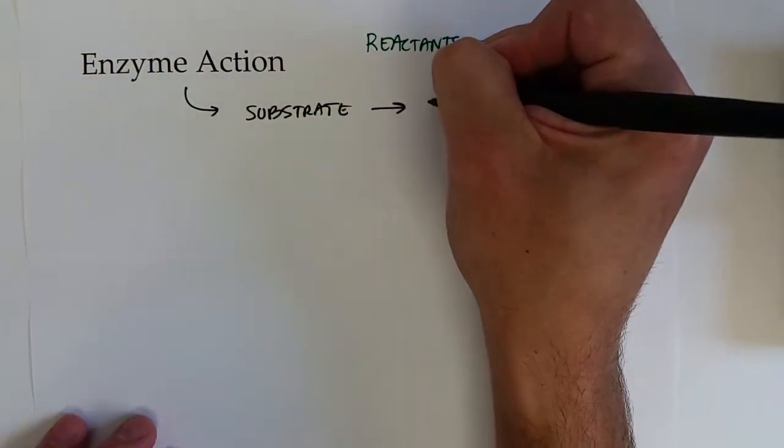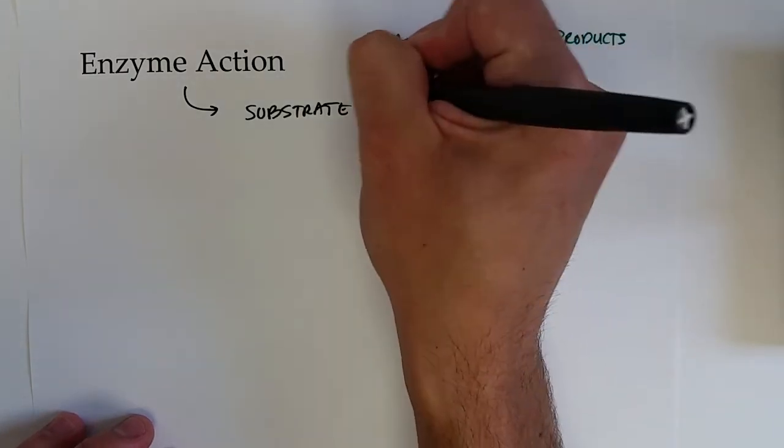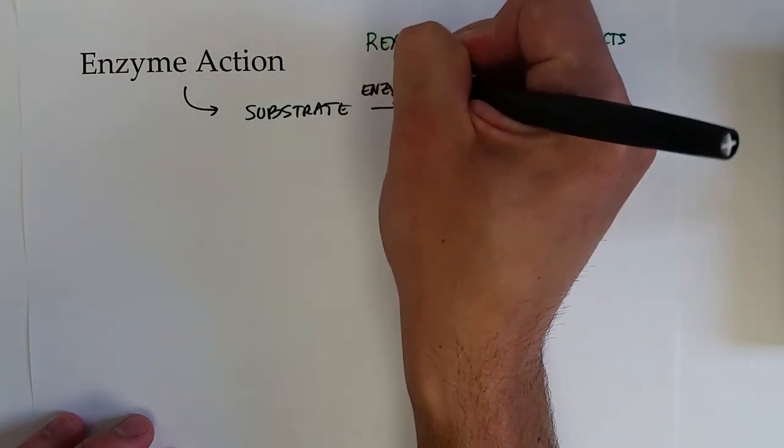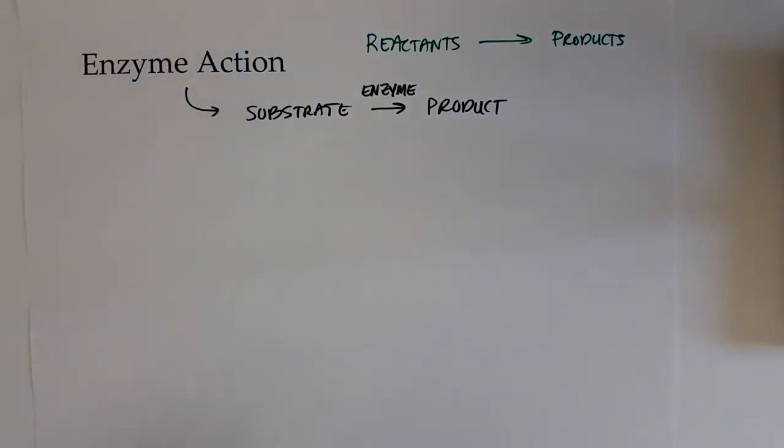For enzymes, we typically call the reactants the substrate, and it still produces a product. Of course, the enzyme is needed there to catalyze it to make product at an efficient rate. All enzymes are proteins.